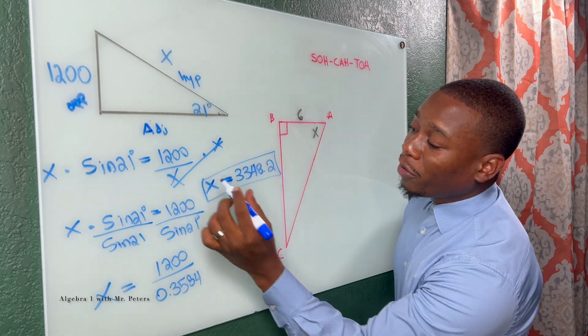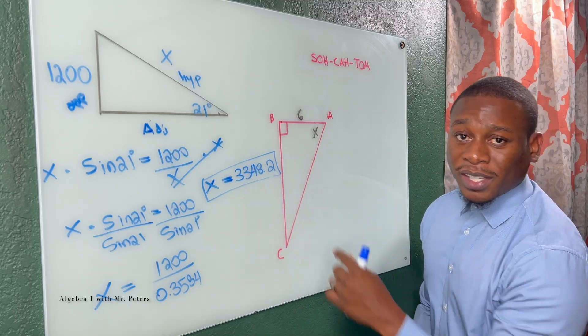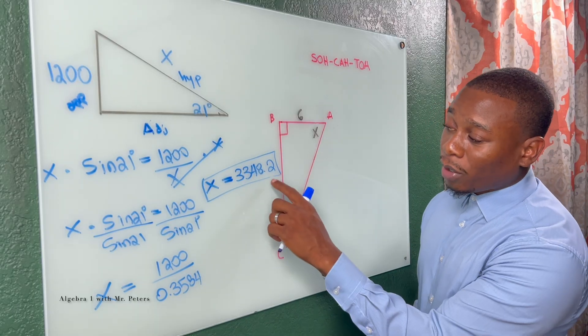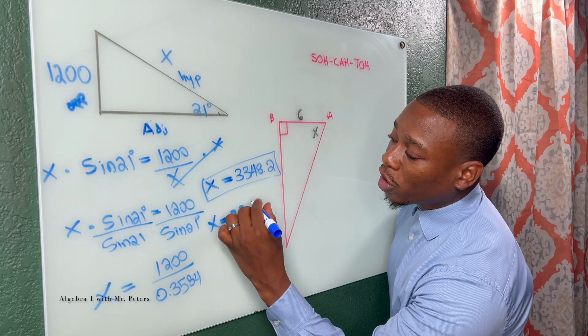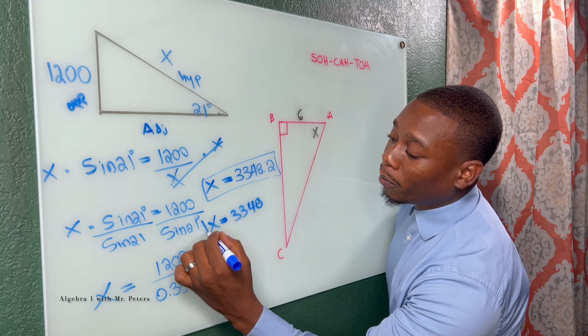Now, just be mindful of the decimal place and where they ask you to round it. They ask to round it to one decimal place. This would be our answer. If it was a whole number, it would just be 3348 by itself.